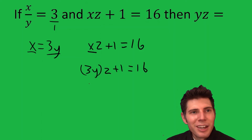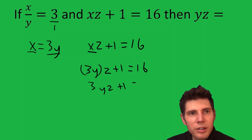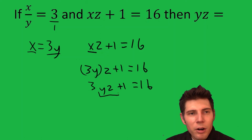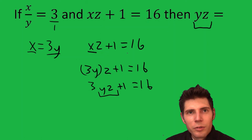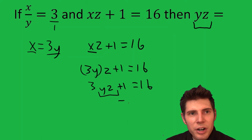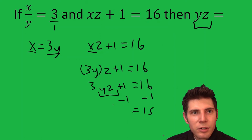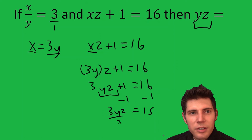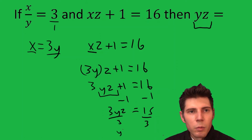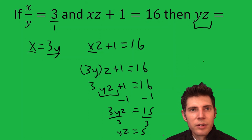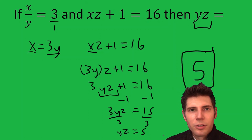We can get rid of these parentheses, so we have 3yz plus 1 equals 16. Now our yz is together, and our whole goal is to solve for yz. So we're going to subtract 1 from both sides, get 15 equals 3yz, and divide both sides by 3. And we get yz equals 5.